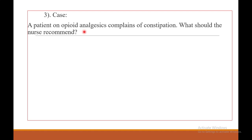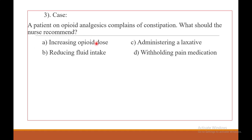Question number three. A patient on opioids complains of constipation. What should the nurse recommend? Choice A — increase the dose. Choice B — reduce fluid intake. Choice C — administer a laxative. Choice D — withhold the pain medication.